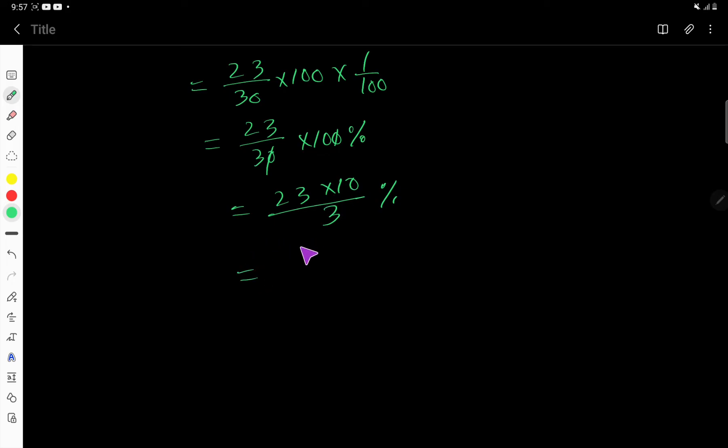So 23 times 10, 230 divided by 3 percent. Now divide 230 by 3. 3 goes into 23 how many times? 7, 21. 7 times 3, 21. Subtract 2. Bring down this 0.